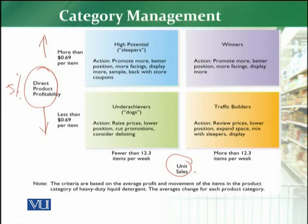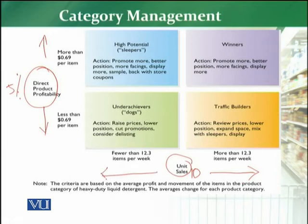For example, on average, 10 units of a product sell per week or per month. So the retailer will see which categories have unit sales more than 10, and which categories have unit sales less than 10. Based on these parameters — profitability and unit sales — the retailer defines, explains, and takes action on the entire category management.